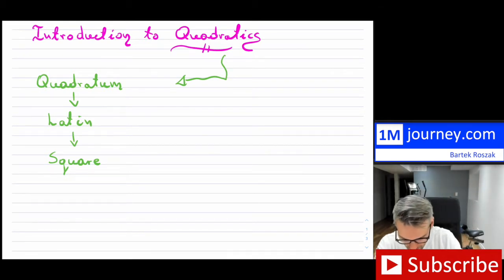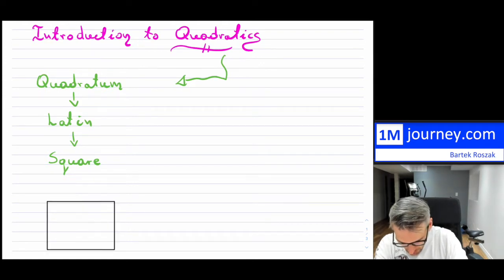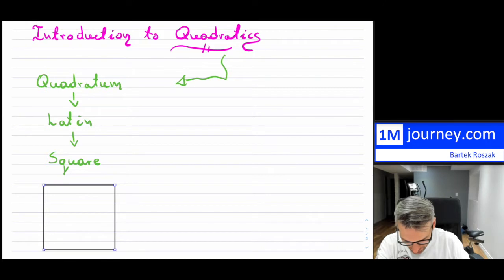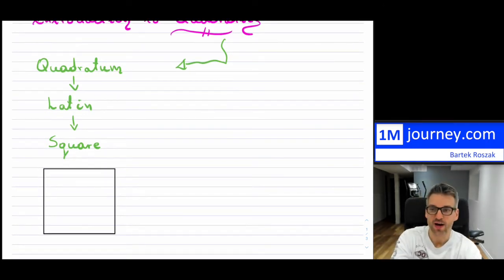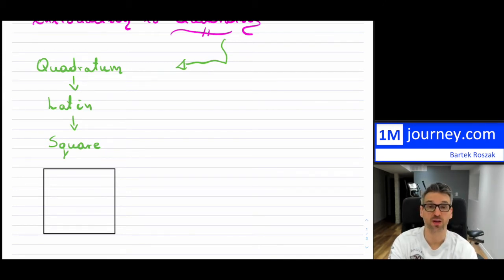If you think about a square, you will notice that a square has basically four sides. Now, quadratics in general don't just mean squares — they can be rectangles and any quadrilaterals. So 'quad' means four, so four-sided.